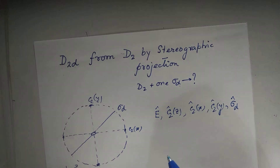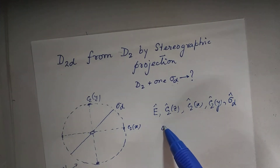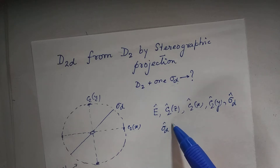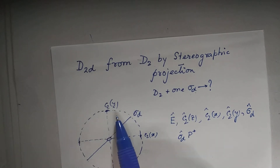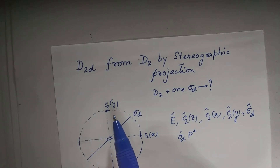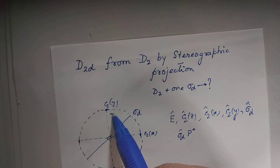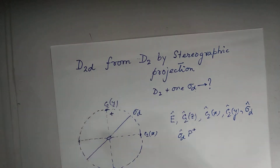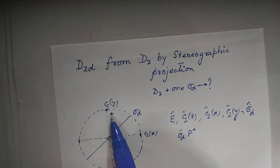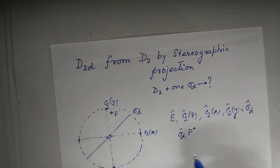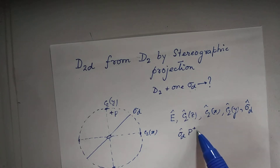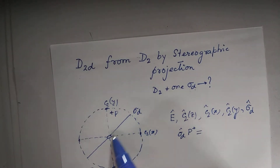Sigma_d multiplied by E is sigma_d. What is the result of sigma_d on an arbitrary point? Sigma_d on a starting point p+, which means a point p in space above the plane of the paper. Its projection on the equatorial xy plane is indicated by a plus sign. What happens if sigma_d is applied on p+? The plane is this reflection plane.